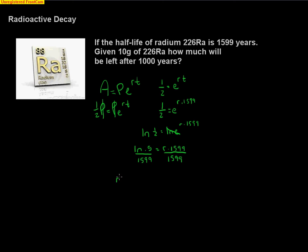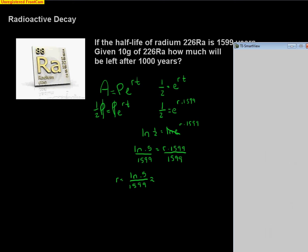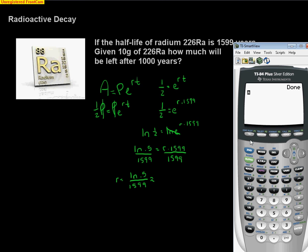Dividing by 1599 we wind up with our rate equaling the natural log of 0.5 divided by 1599. If we were just told to solve for the rate, we would put this in our calculator and figure out what we get.